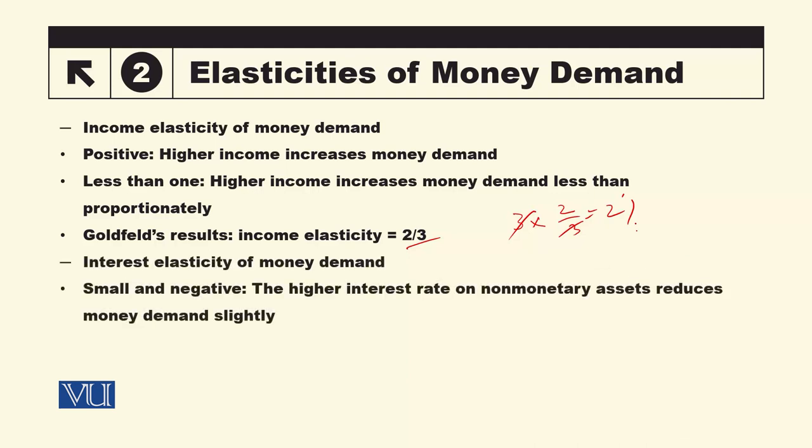Similarly, the second determinant was interest rate. We know that as the interest rate rises, money demand falls — so the relationship is negative. But by how much does it fall? When economists quantified this empirically, two things emerged: first, this elasticity is small, and second, it is negative. The interest rate here refers to non-monetary assets — assets other than money — and if their interest rate rises, money demand decreases.